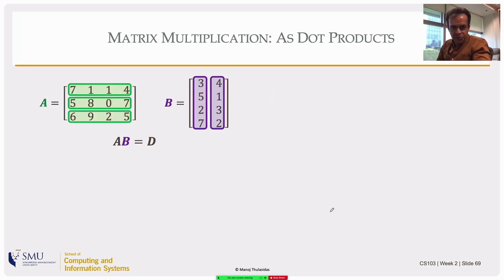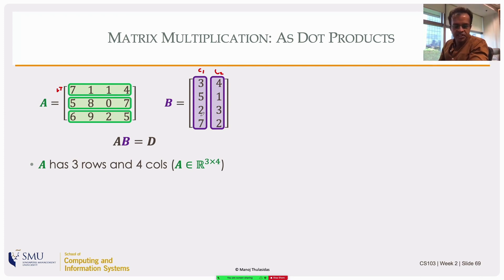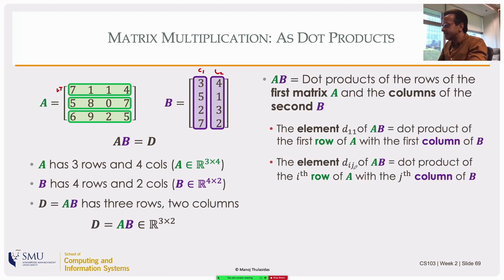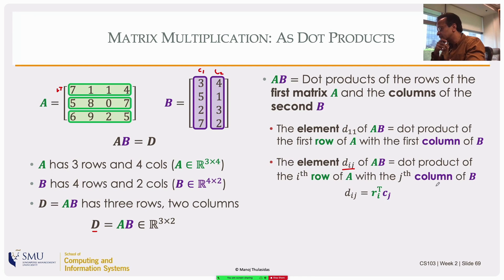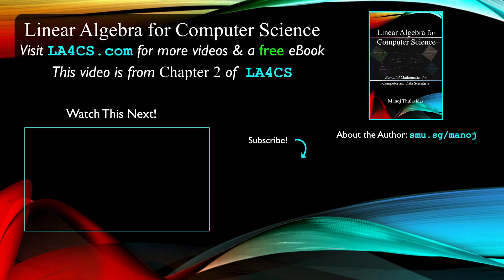Finally, matrix multiplication expressed as dot products. In the product AB = D, think of A as having row transposes r1^T, r2^T, r3^T and B as having columns c1, c2. The (i,j) element d_ij equals the dot product of the i-th row of A and the j-th column of B. This is the same as the element-wise definition but viewed through the lens of dot products, and is another example of block-wise multiplication.